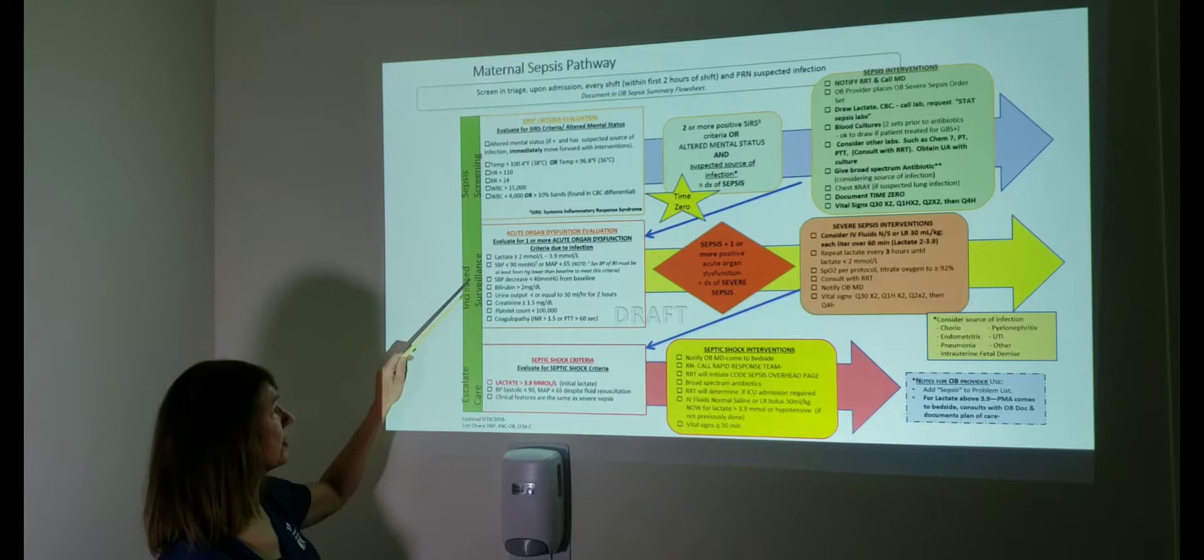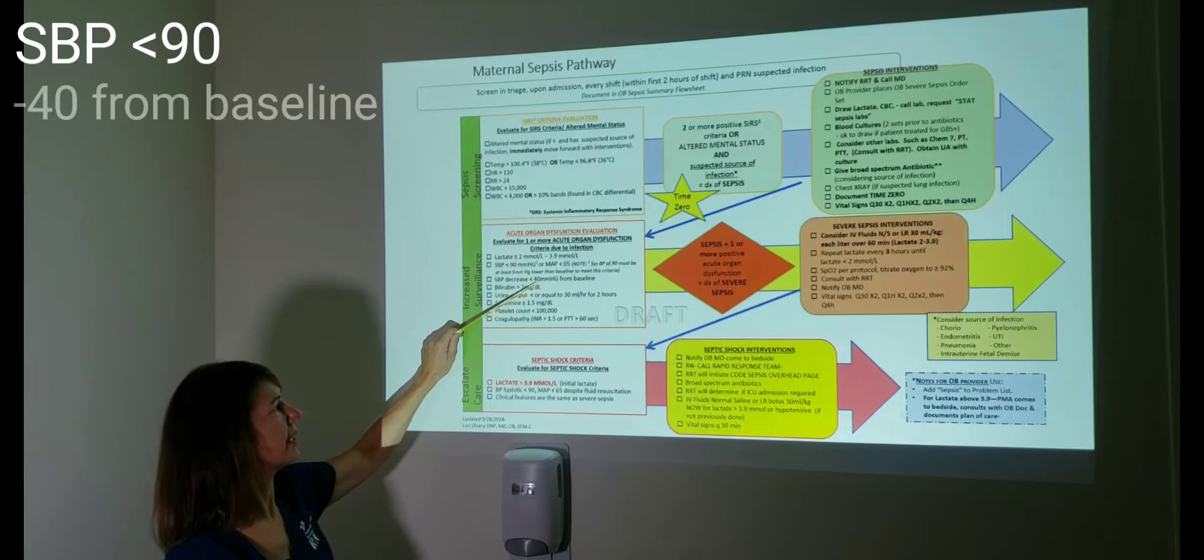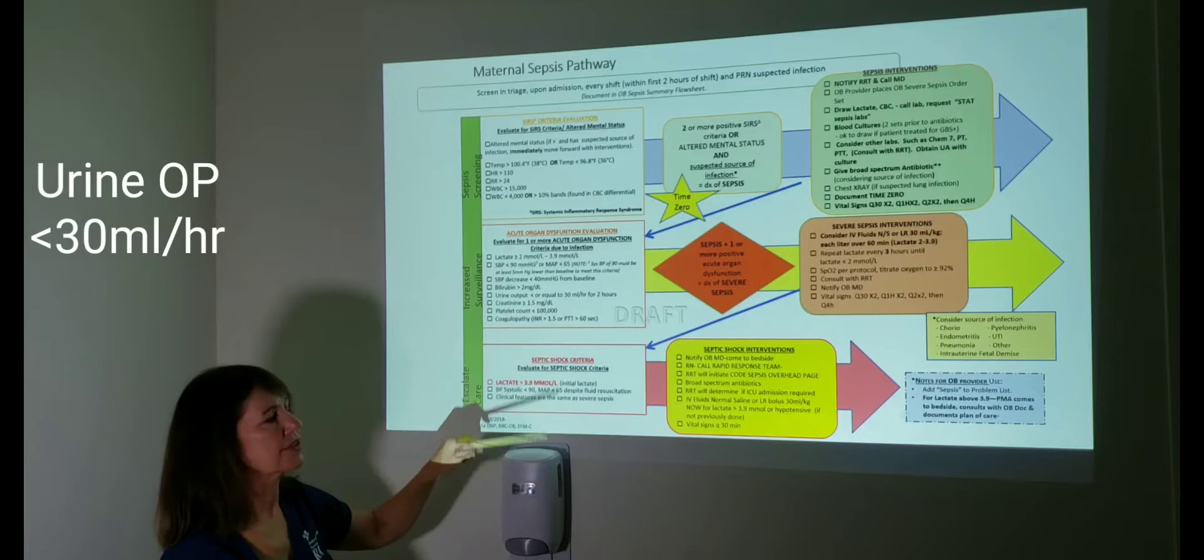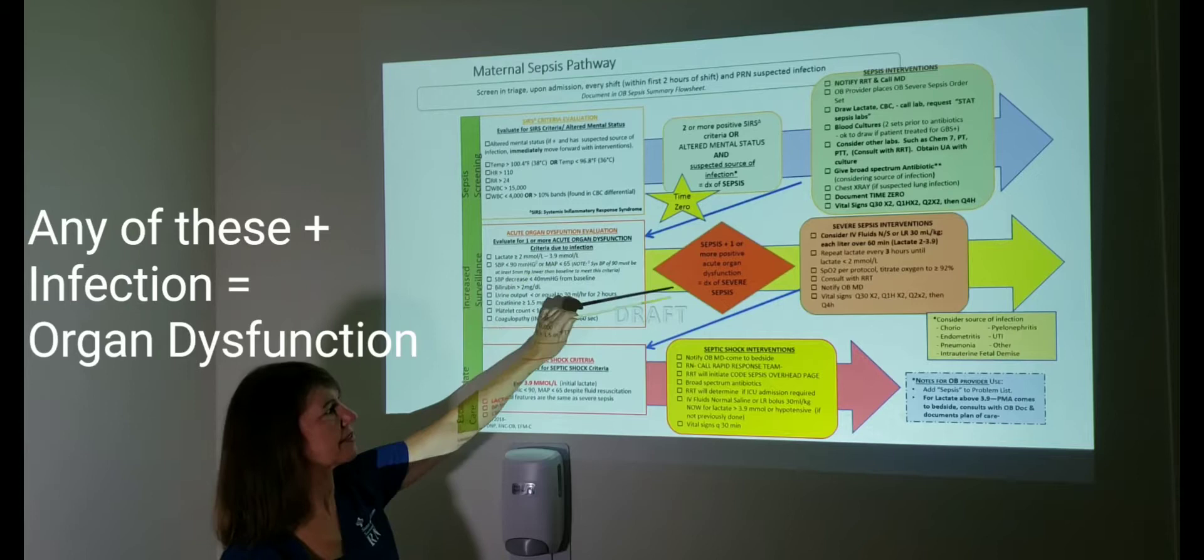Now vital signs—if our patient has a systolic BP less than 90, that's organ dysfunction. Or if they just have a decrease of 40 from the baseline, that is also organ dysfunction. Urinary output less than 30 mLs per hour for two hours, that is also criteria. So any one of these organ dysfunction in the presence of infection is considered severe sepsis.